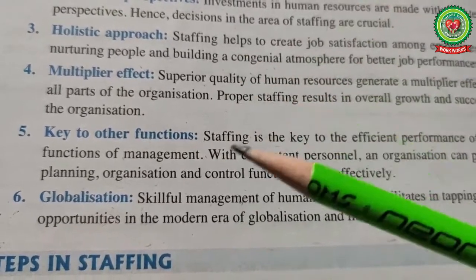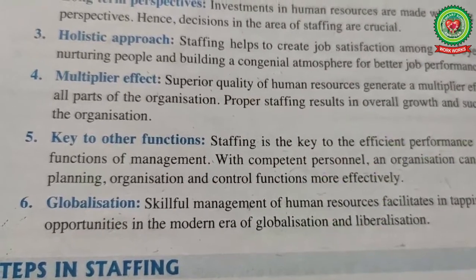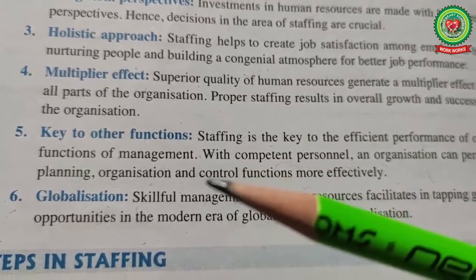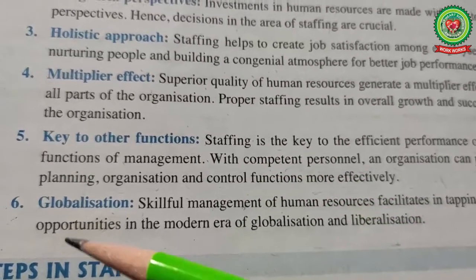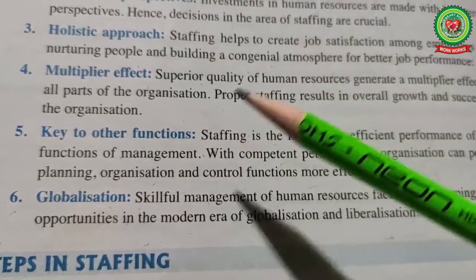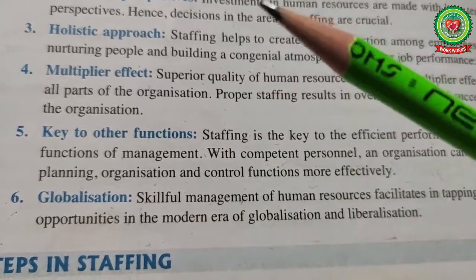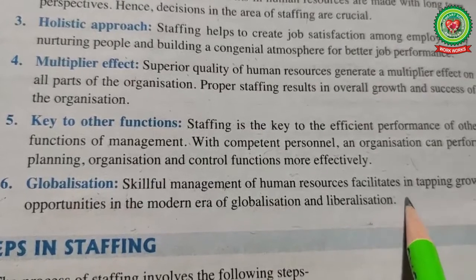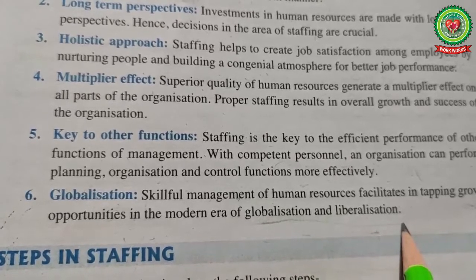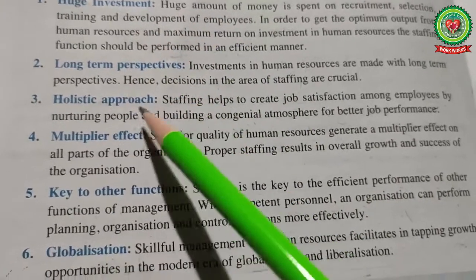Fifth, key to other functions - staffing is the key to efficient performance of all other functions of management. With competent personnel, an organization can perform planning, organizing and controlling functions more effectively. Sixth, globalization - skillful management of human resources facilitates tapping growth opportunities in the modern era of globalization and liberalization.